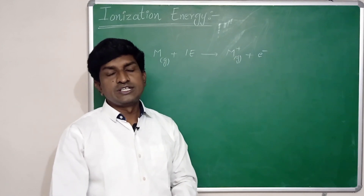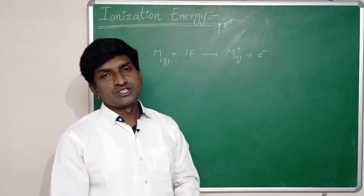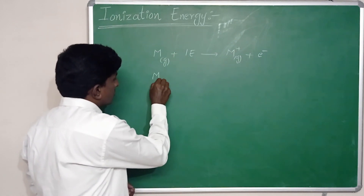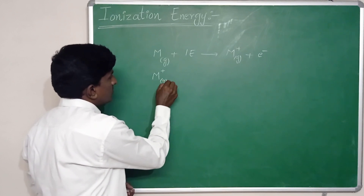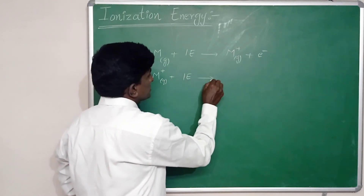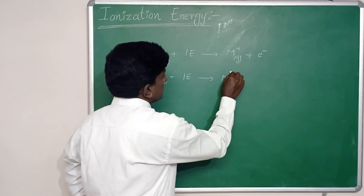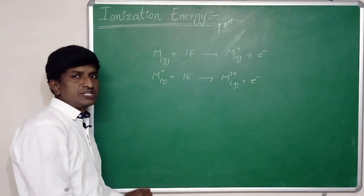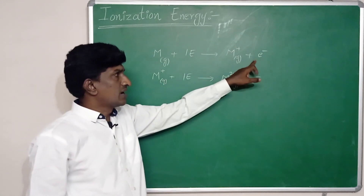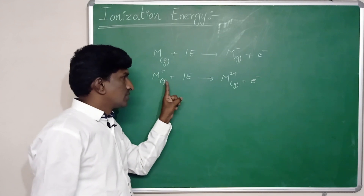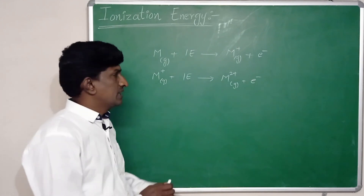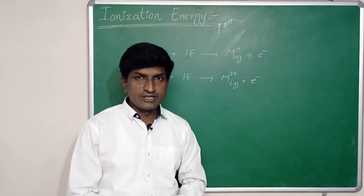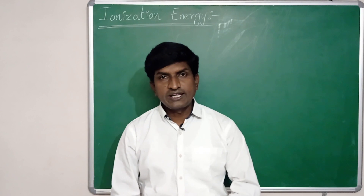This ionization energy is said to be the first ionization energy. If you want to remove one more electron from the uni-positive ion, then this ionization energy is said to be the second ionization energy. So first we remove one electron, and then again from this ion we remove one more electron — that energy is called second ionization energy.